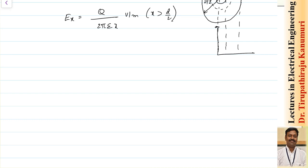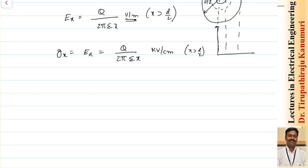Generally, voltage is represented in kV and distance in centimeters, so the practical unit is kV per centimeter. This electric field intensity E(x) indicates the dielectric stress at a particular point, or the gradient of voltage — how the voltage is changing. That is why E is sometimes represented by g. So g(x) = E(x) = q / (2πε·x), in kV/cm, for x ≥ d/2. Let us call this equation number 1.